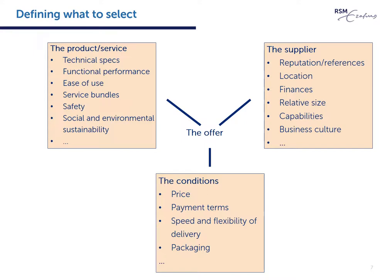When thinking about supplier selection criteria, it may be helpful to distinguish three main levels. First, at the most aggregate level, we have the criteria or features of the supplier organization — for instance, its financial stability or location. Second, we have the product or service involved, including its performance and sustainability. Third, we can distinguish the conditions, including price and delivery. When Beil refers to price, quality, and delivery as the most important selection criteria, these are in fact product or condition level criteria.